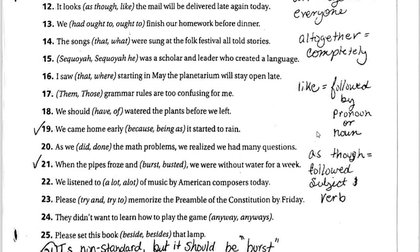Like versus as though: like is followed by a pronoun or noun, while as though is followed by a subject and a verb. Like is essentially the verb in the main clause, and as though is a conjunction that begins a subordinate clause — just like any subordinating conjunction. For example, while Sally read her book is a subordinate clause because it has the subordinating conjunction while.